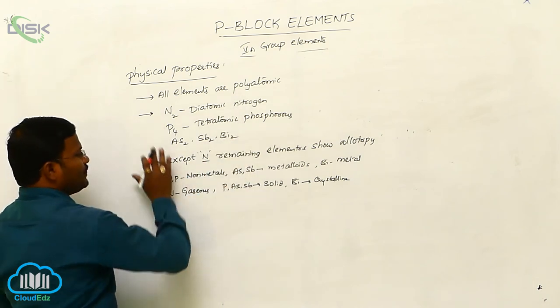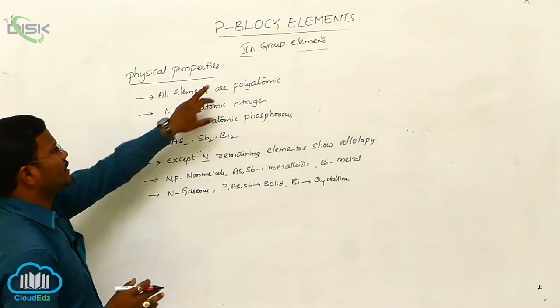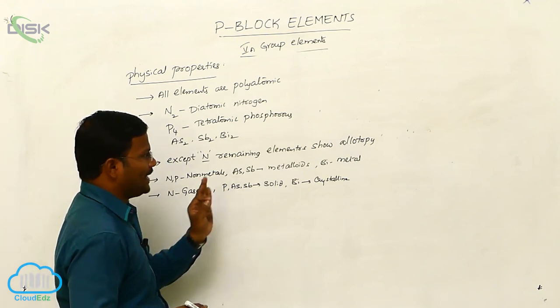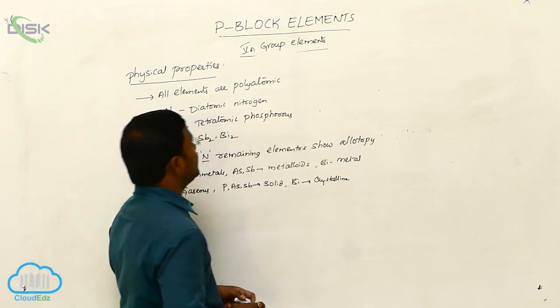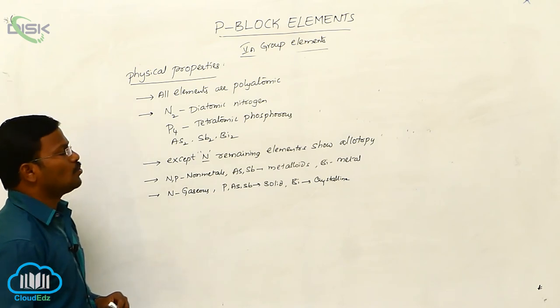So this is, these are some physical properties that are exhibited by 5A group elements or 15th group elements of periodic table. They are also called as nitrogen family.